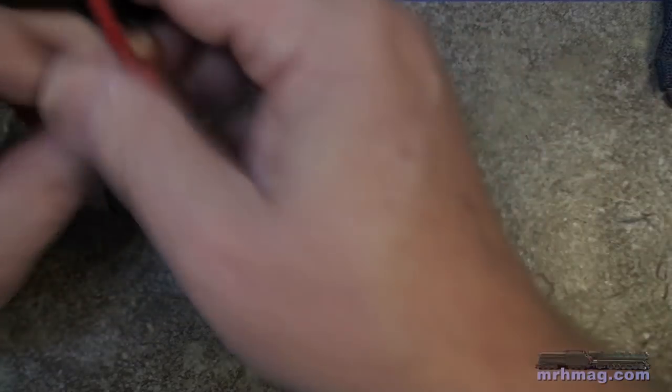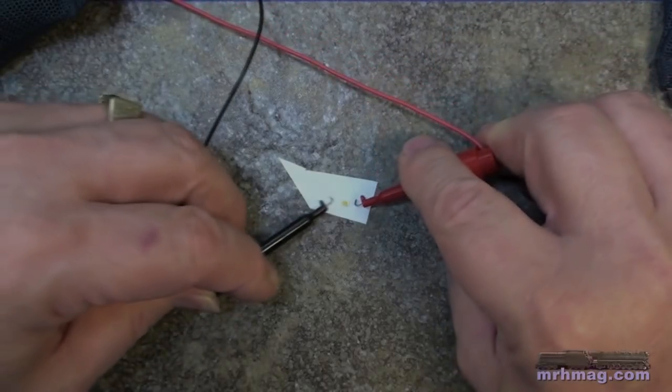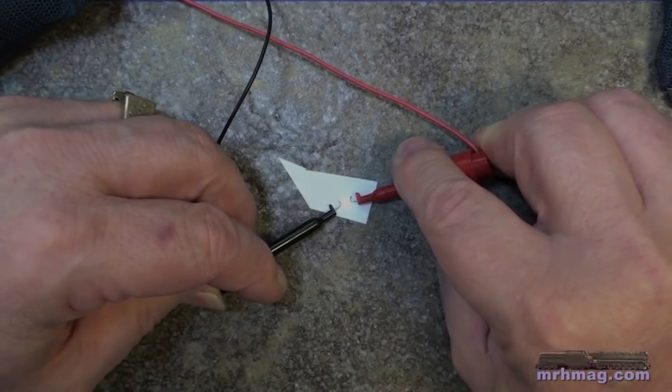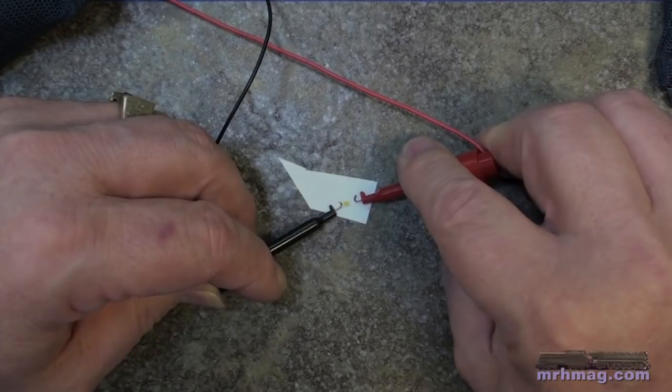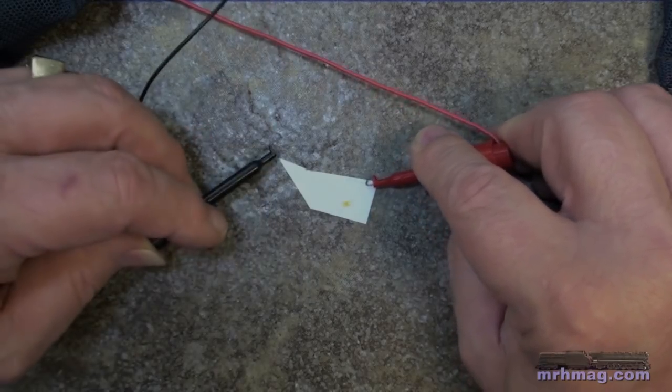Well, that didn't work, so I must have the wrong polarity. So I'll come around and probe it from the other side. Either that or it's a bad LED. No, it's not a bad LED. See, it lights up right there. So the plus is going to be on the right hand side.